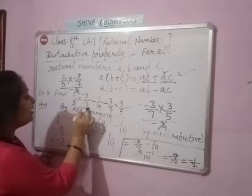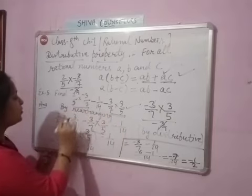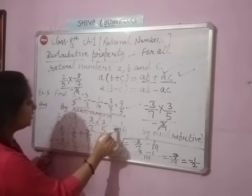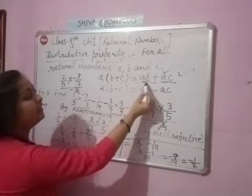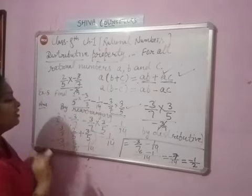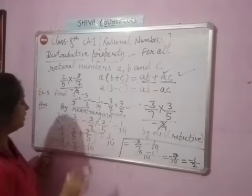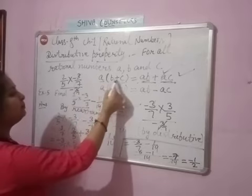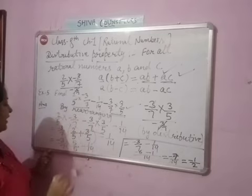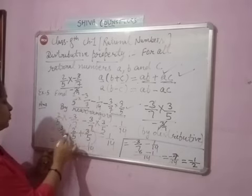We have done arrangement. First pair, last pair. This form is ab and ac, equal to a times b plus c. A is minus 3/7, b is equal to 2/5, and c is equal to 3/5.